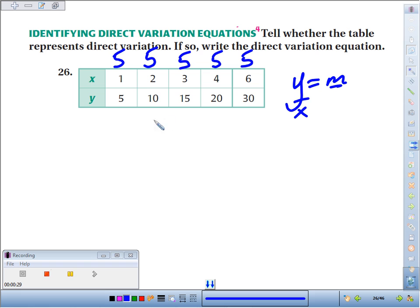We multiply by 5 every time. That is our magic multiple, or our slope, so our equation would be y equals 5x. So yes, it is direct variation, and here's the equation for it.